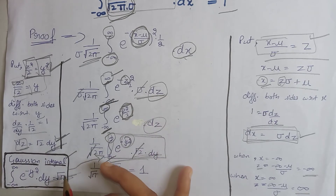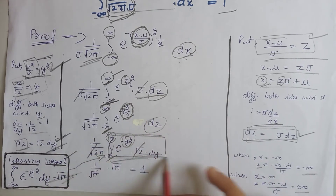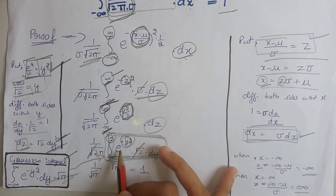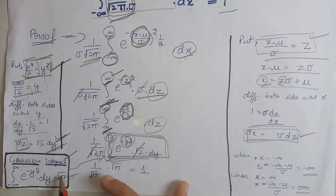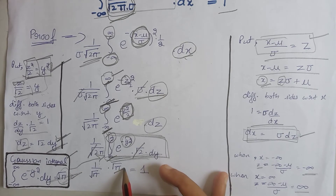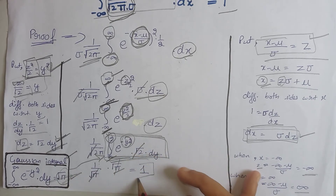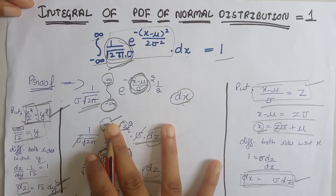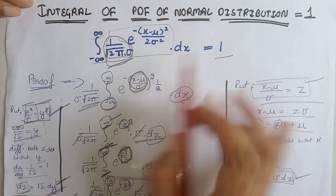We know that the result of the Gaussian integral is square root of pi. That's why at the place of the integration from minus infinity to infinity of e raised to the power minus y squared dy, we write square root of pi according to the Gaussian integral. This will be cancelled out by this term, and our answer equals 1. We have proved that the integral of the PDF of the normal distribution equals 1.